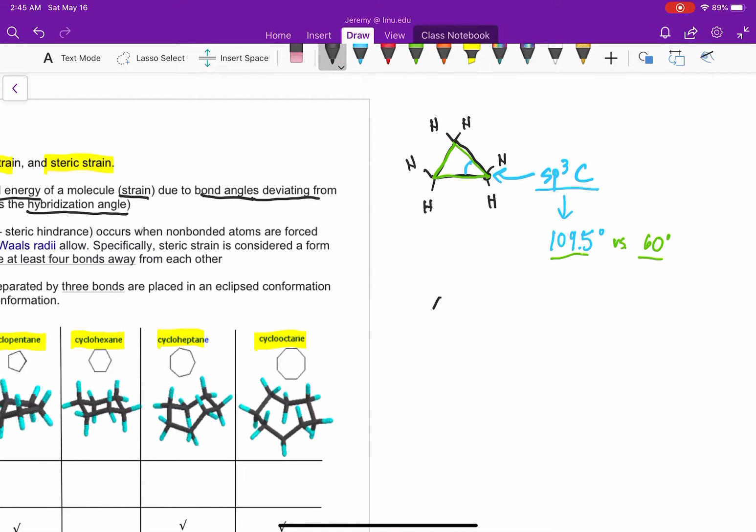That means that we're not getting ideal orbital overlap. If we look at this bond in blue, let's draw in some of our orbitals here. If I draw in the orbitals, the orbitals are actually bent out a little bit, like such. So we're not getting the perfect sigma bond.